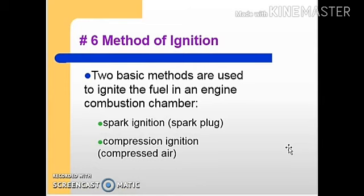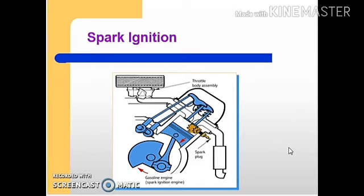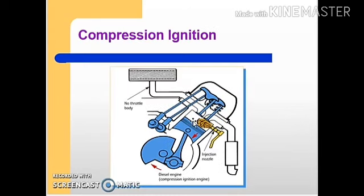Method of ignition: two basic methods are used to ignite the fuel in an engine. First, spark ignition, in which an air and fuel mixture is drawn into the cylinder and ignited with the help of a spark plug. Second, compression ignition, in which only air is drawn into the cylinder and fuel is injected directly into the cylinder — this is the case in a diesel engine.